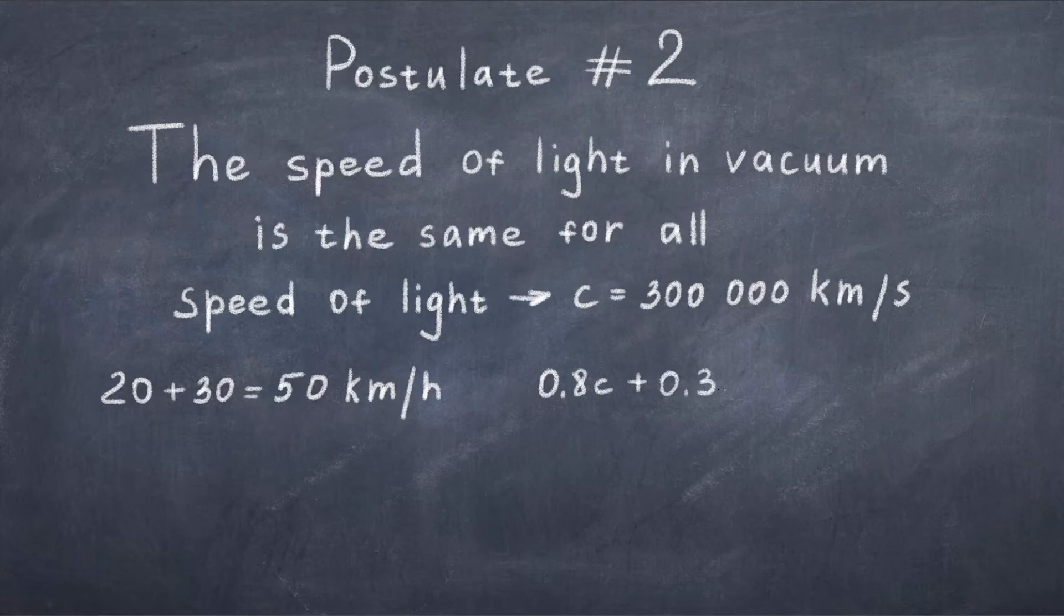Now imagine that the train is moving really fast at 80% the speed of light. And then the person in the train throws the ball at 30% the speed of light. If we just add up these numbers we would end up with 110% the speed of light. This is impossible since we just learned that the speed of light is the maximum speed. How do we resolve this issue?